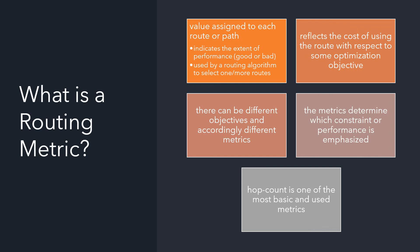One of the most commonly used and simplest routing metrics is hop count, which means the number of hops required for a packet to reach the destination from the source. One hop basically means one link. For example, if node 1 wants to reach node 4 via nodes 2 and 3, there are 3 links in between, each called a hop, so the hop count is 3.